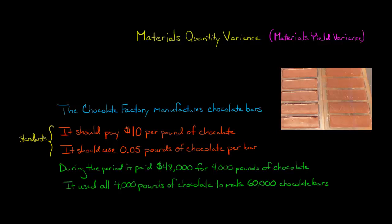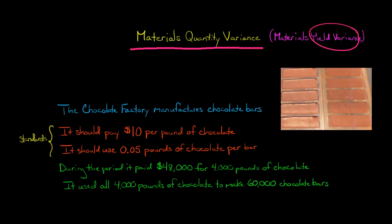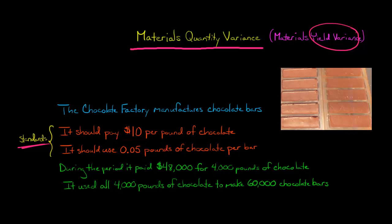In this video, we're going to discuss how to calculate the materials quantity variance, which is also known as the materials yield variance. We've got a company called the Chocolate Factory that manufactures chocolate bars, and management has set some standards: the company should pay $10 per pound of chocolate, and should use 0.05 pounds of chocolate whenever it makes a chocolate bar. Those are the standards set by the executives.